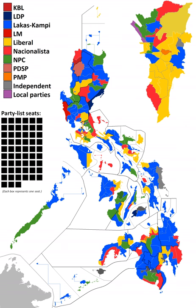Muntinlupa: two-term Senator Rodolfo Biazon is running for a seat in the lower house against former broadcast journalist Don Puno in a seat vacated by Biazon's son Ruffy, who is running for the Senate. Puno unsuccessfully ran for Congress in 2001, for the Senate, and in 2007 for the same congressional district. They would also be facing three other candidates, namely incumbent Coun. Lake Espalita, Atty. Ray Bule, and an unknown candidate. Senator Biazon won with 46% of the vote against Puno's 27%.